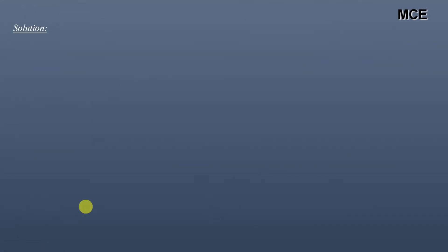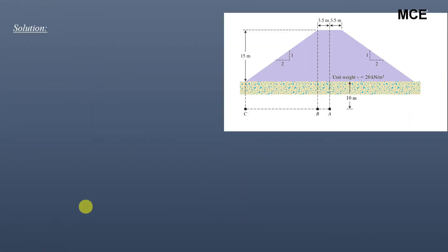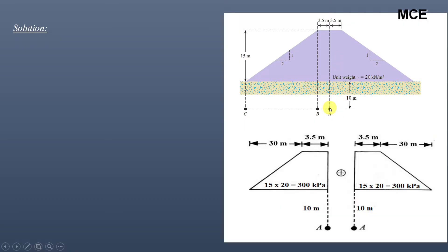First we will find the vertical stress increase at point A. For this, we will make point A a corner of this embankment loading. To make point A exactly at the corner of this embankment loading, we will divide this embankment loading into two parts such that it makes the shape of a trapezoid.